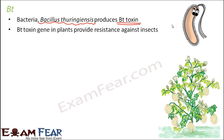Bt toxin is produced by bacteria. Inside the bacterial cell there is a particular gene which produces this Bt toxin. That Bt toxin gene is extracted from bacteria and inserted inside the plant. Once the plant has the Bt toxin gene, it will produce Bt toxin, which acts as an insecticide, making the plant resistant to insects with an inbuilt insecticide.